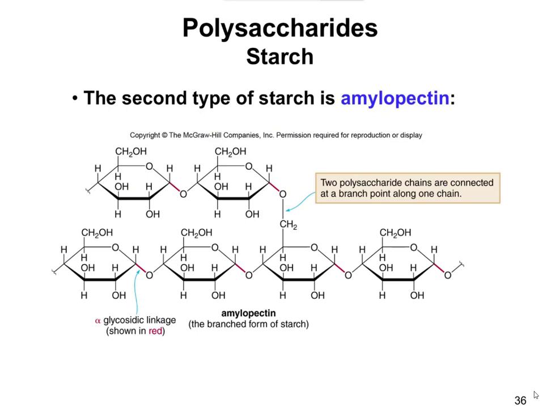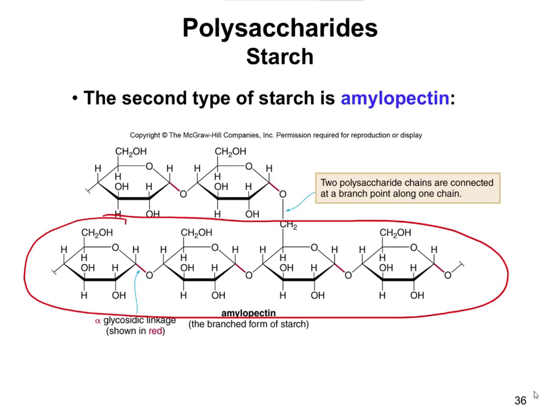Amylopectin is the branched form of starch. What it means when it's branched is that we have that initial linear chain — the same as the previous slide with amylose — but then there are branch points where two polysaccharide chains are connected along one chain. That branching allows it to continue on, and this allows us to store these molecules better. Instead of having one super long stringy molecule, these branch points allow us to have more ends on a molecule. The more ends we have, the more readily we're able to break them down to get energy later.